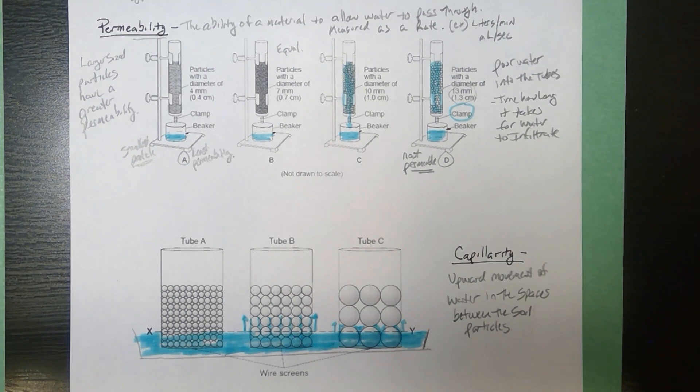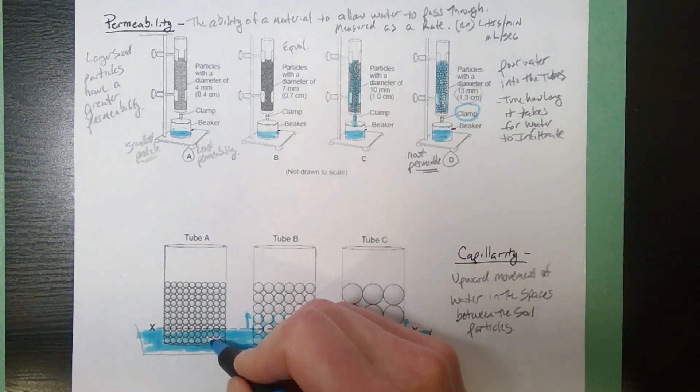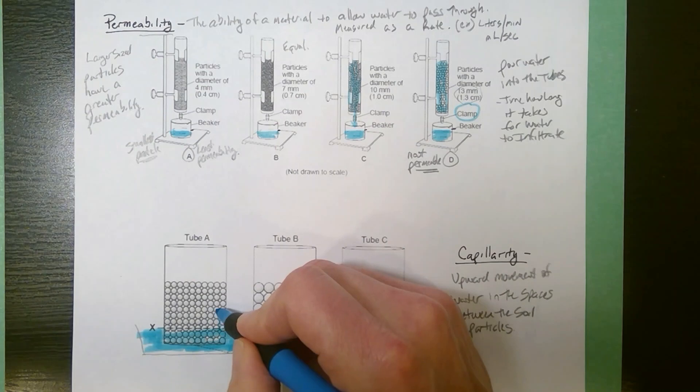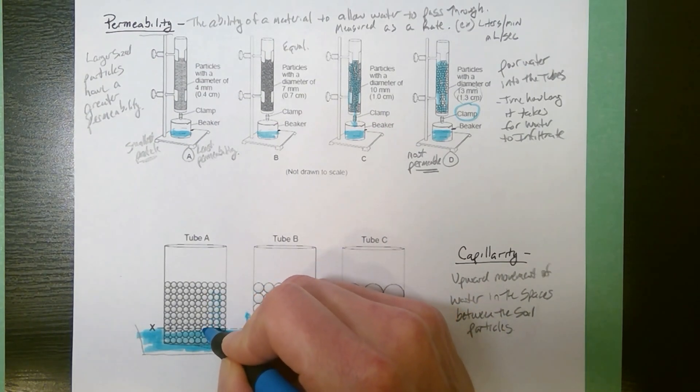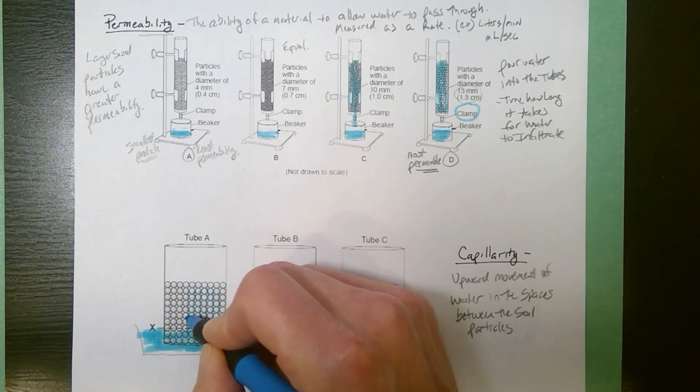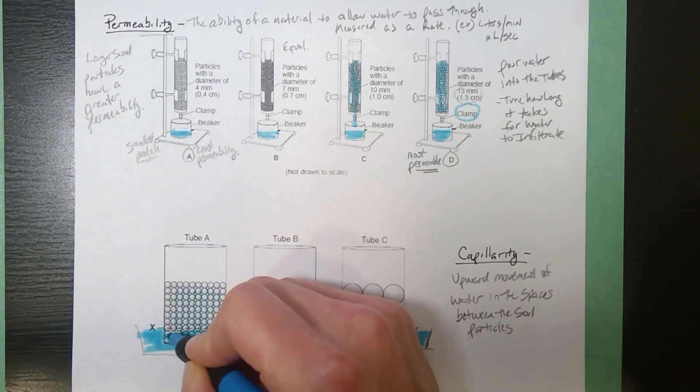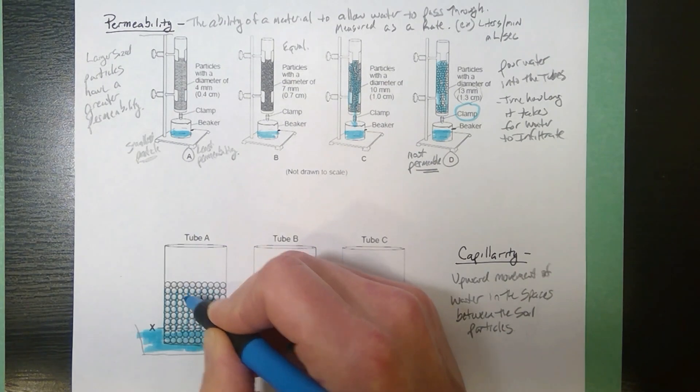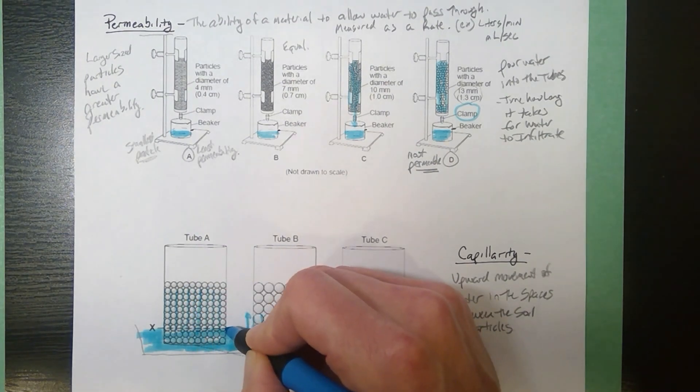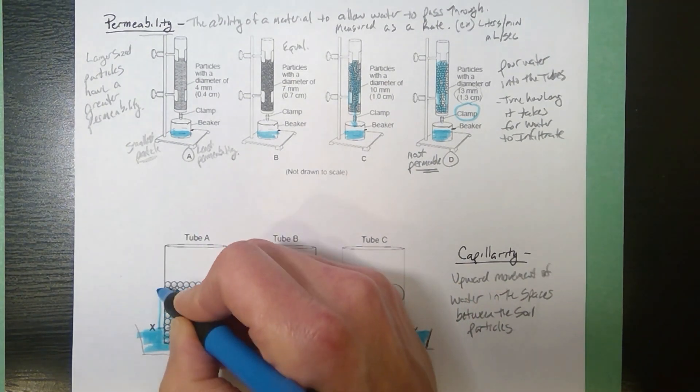Finally, the last tube, tube A, has the smallest particles. Once again, water gets drawn upwards. But this time, because the spaces are really tiny, the particles get drawn upwards. If you have like a paper towel, you stick the bottom of the paper towel. There are tiny little tubes, fibers between the wood and the paper towel, and you'd see that all of that water gets pulled upwards.